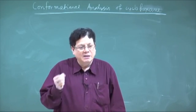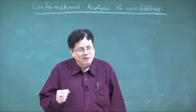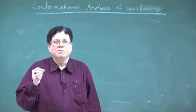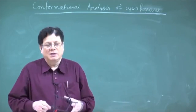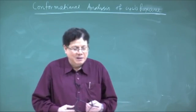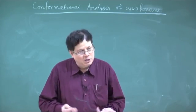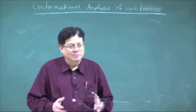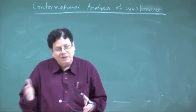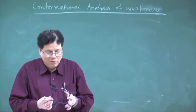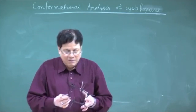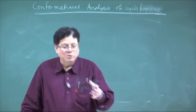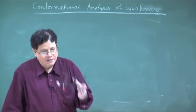The simple reason is to reduce the torsional strain. In the case of cyclobutane, although the angle strain increased a little bit, the gain is more if you reduce the torsional strain. In cyclopentane, angle strain is virtually zero, so even if you make it puckered the angle strain still remains zero, but you gain much more because you are reducing the torsional strain. Now let us come to cyclohexane.